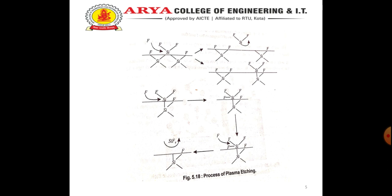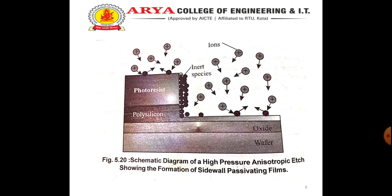CF4 plasma may be used to etch silicon on silicon dioxide or silicon dioxide on silicon. The etch rate may be increased by adding oxygen to CF4 gas for both silicon and SiO2, because O2 will react with carbon atoms to form CO2. This removes carbon atoms from the process and increases fluorine concentration. Such plasma is called fluorine rich.